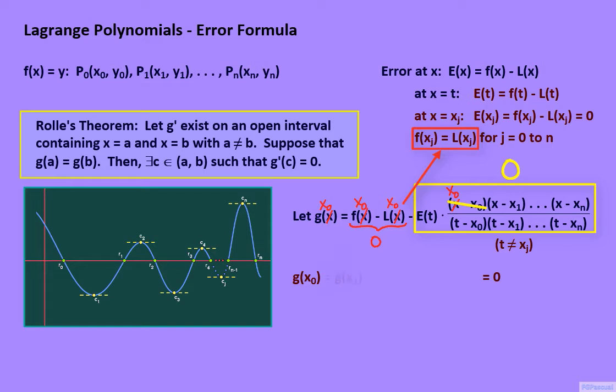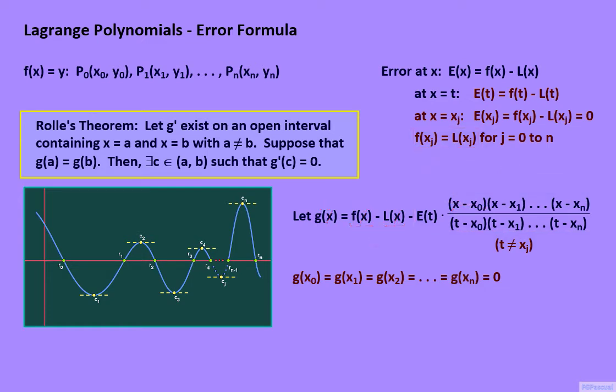The same will be true if we plug in x₁ or x₂, or any of the values through xₙ for x in g. Now this makes a total of n+1 x-intercepts for the function g. But we're not done yet. There is one more x-intercept.